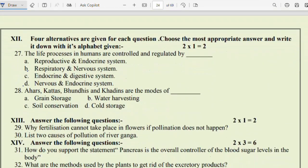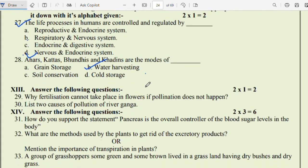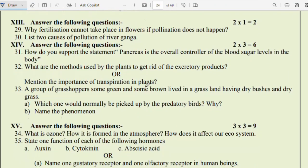Part C, Biology. Here also two multiple choice questions. Question 27: The life processes in humans are controlled and regulated by option D, nervous and endocrine systems. Question 28: Haras, Kattas, Bundis and Kathins are the modes of water harvesting.